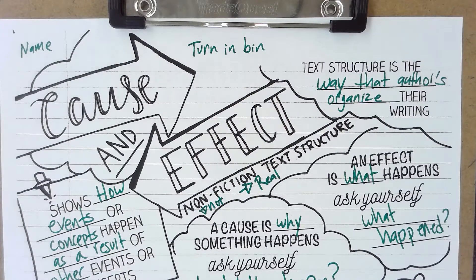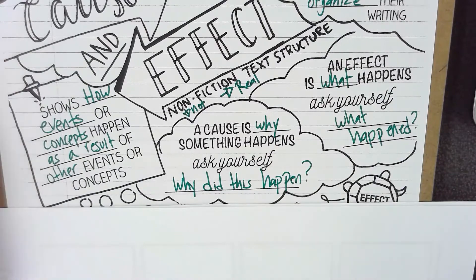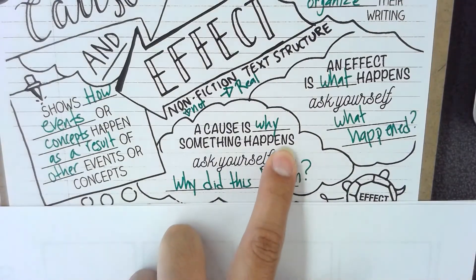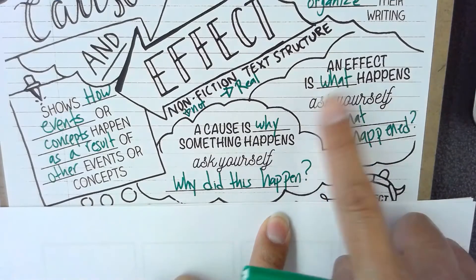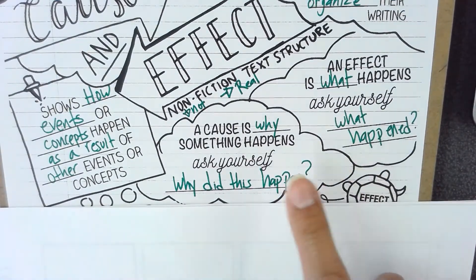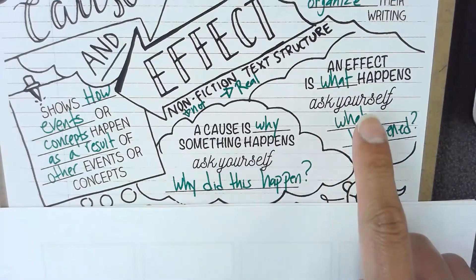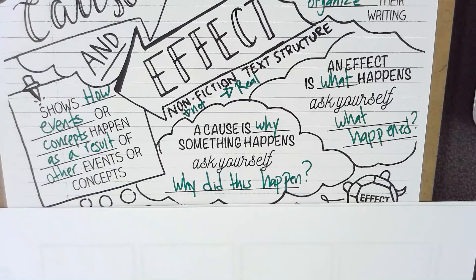A cause is why something happens — you ask yourself, why did this happen? An effect is what happens — you ask yourself, what happened? So a cause is asking why, an effect is asking what happened. Cause and effect shows how events or concepts happen as a result of other events or concepts. Please make sure that you have this written down.